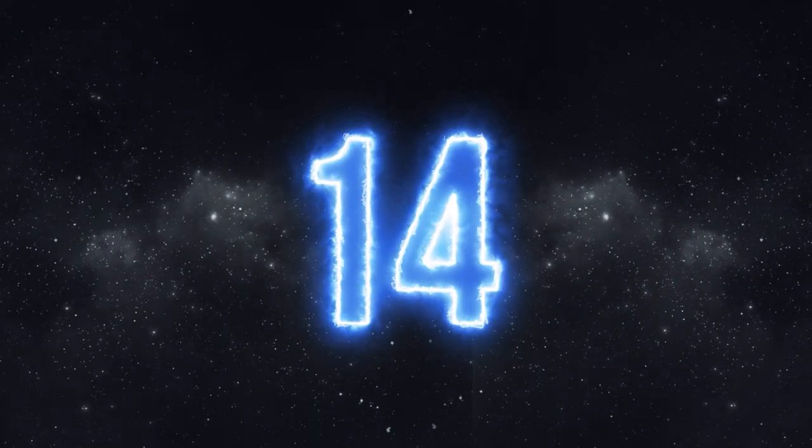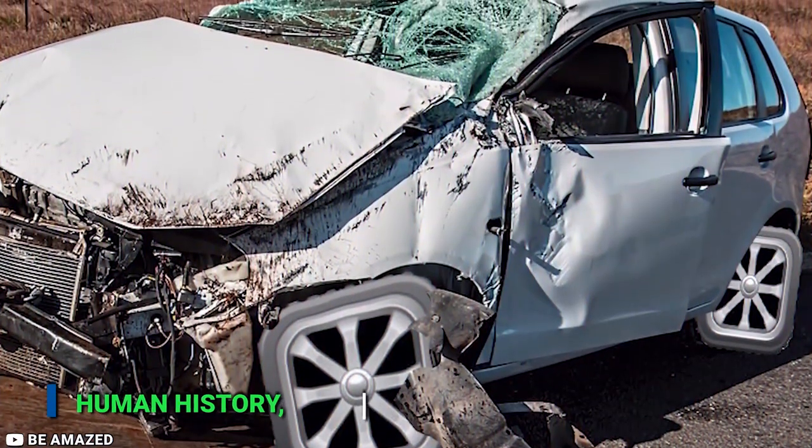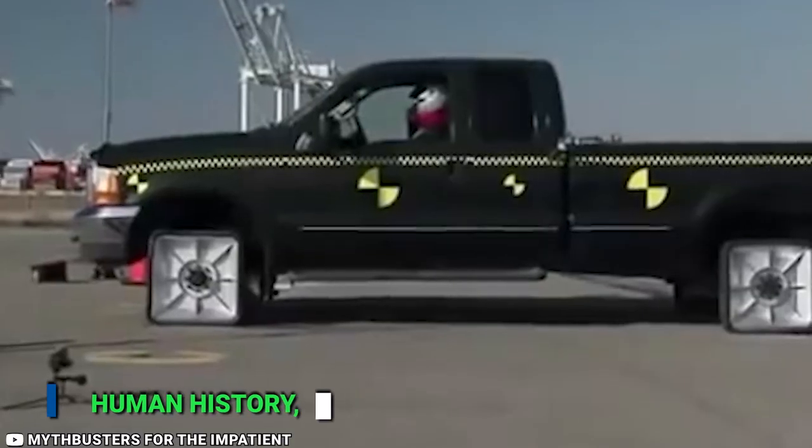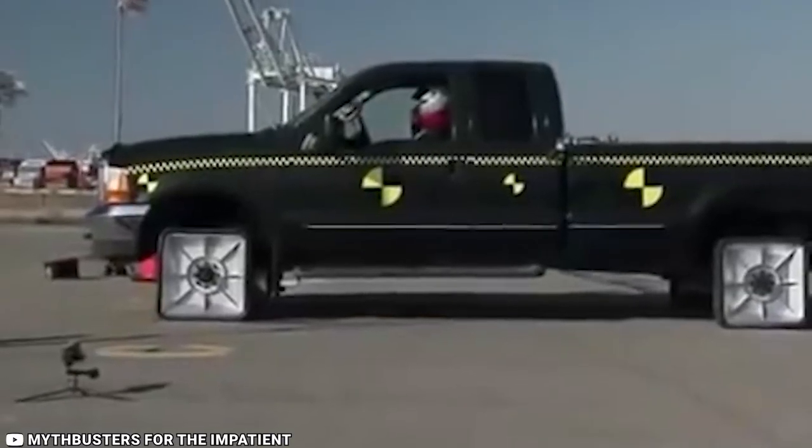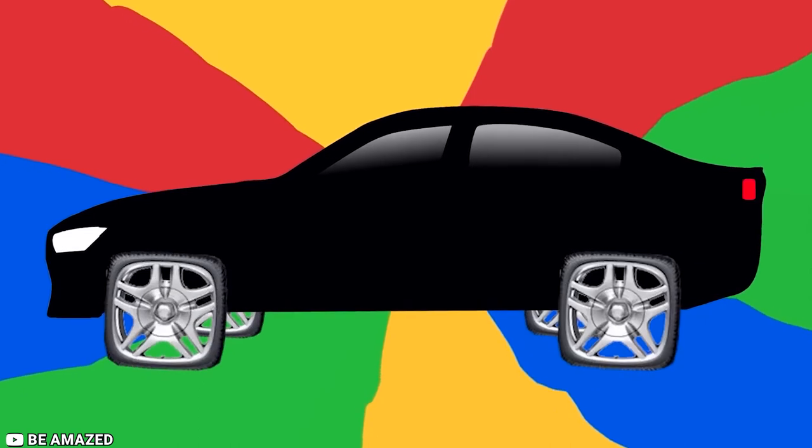Number 14, square wheel. The wheel is no doubt the greatest invention in human history. But have you ever imagined the wheel with a square shape instead of a circular one?